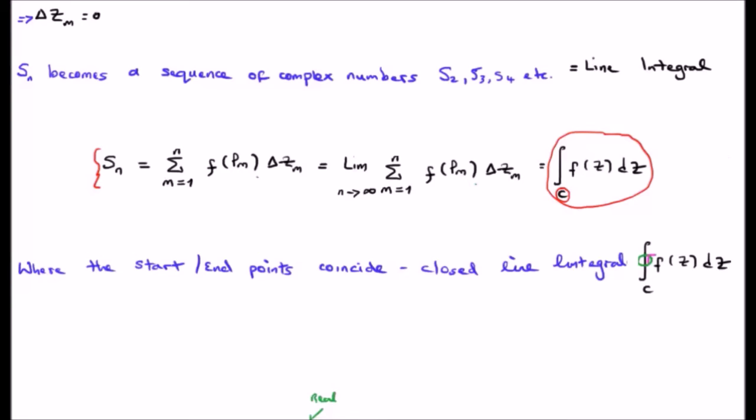Where the start and end point on C coincide, we have our closed line integral here, which we denote by having a closed circle given onto the integral sign, and we give the direction along which we integrate by what I've written here is a purple arrow. That is a closed line integral, or a closed contour integral, or a closed path integral.